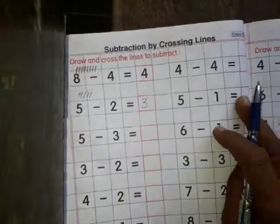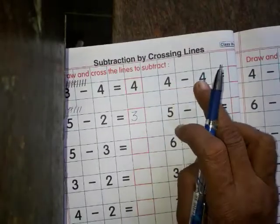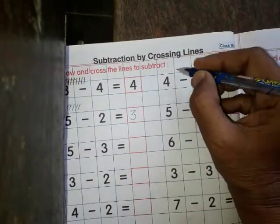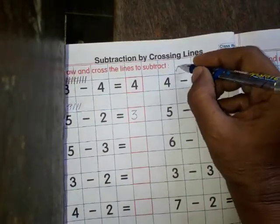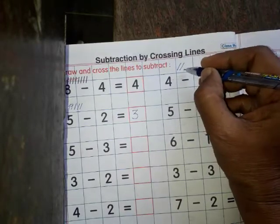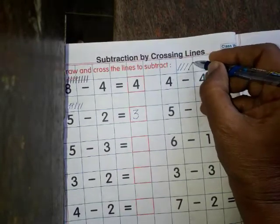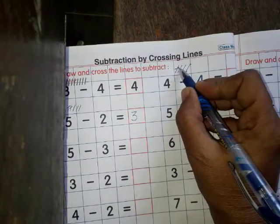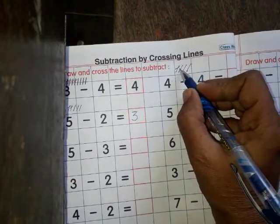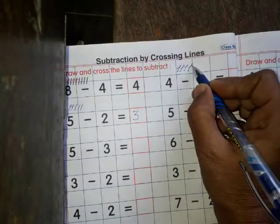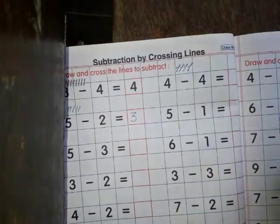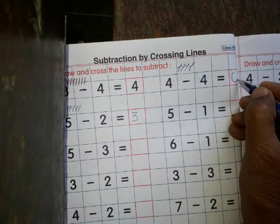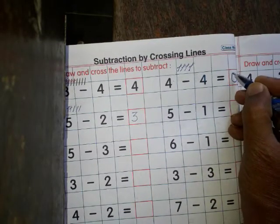यहां आइए देखिए, 4 minus 4. यह है 4 — 4 lines बनाएंगे: 1, 2, 3, 4. अब 4 minus करना है, तो 4 कट करना है: 1, 2, 3, 4 cross कर दिया। तो यहां क्या आया? कुछ भी नहीं बचा, तो answer है 0.